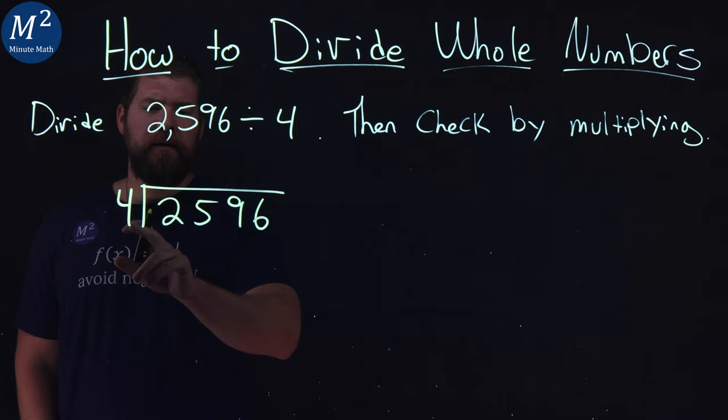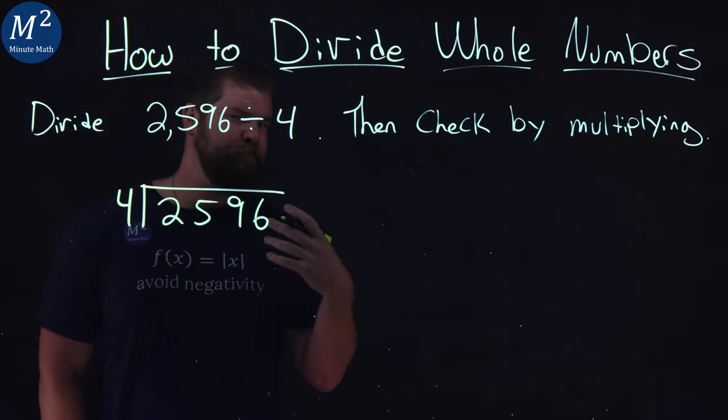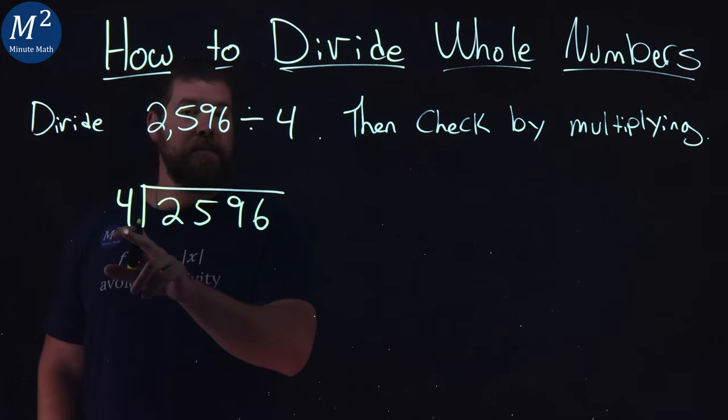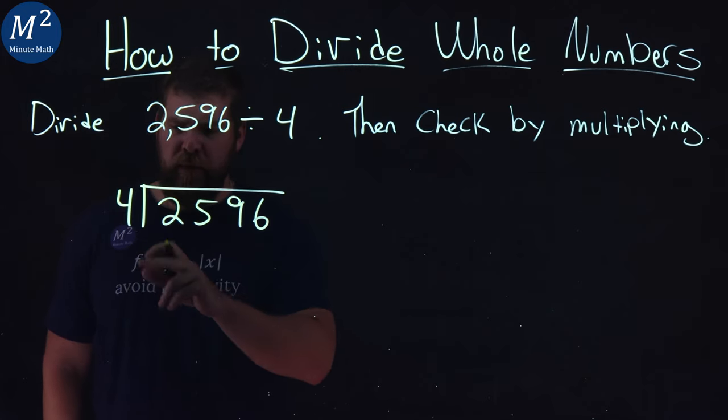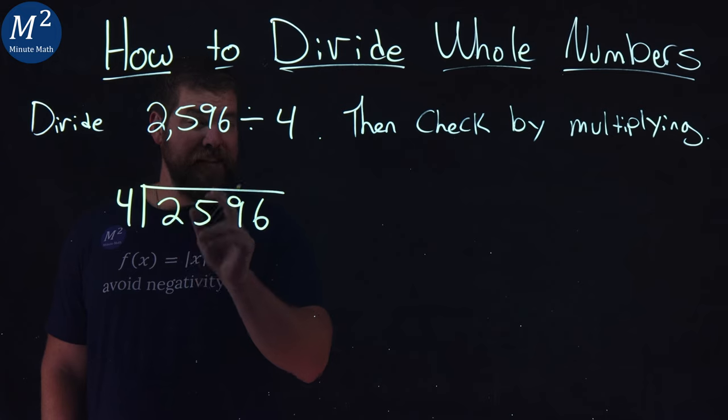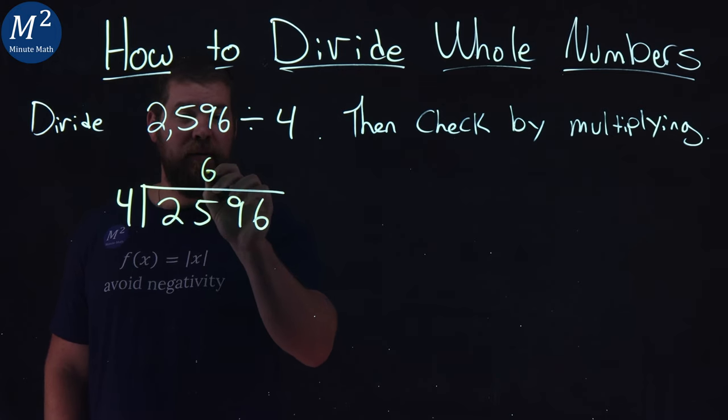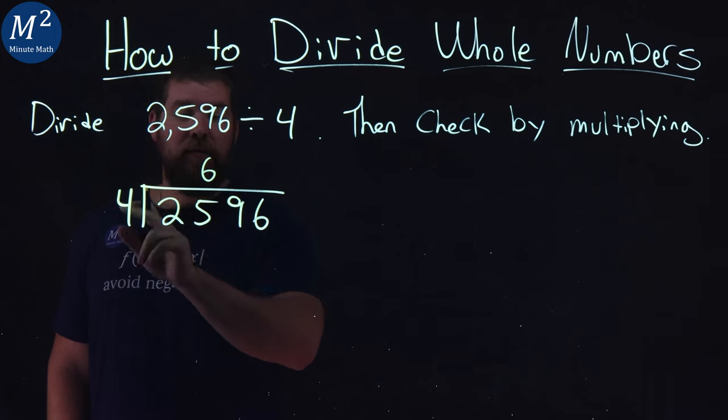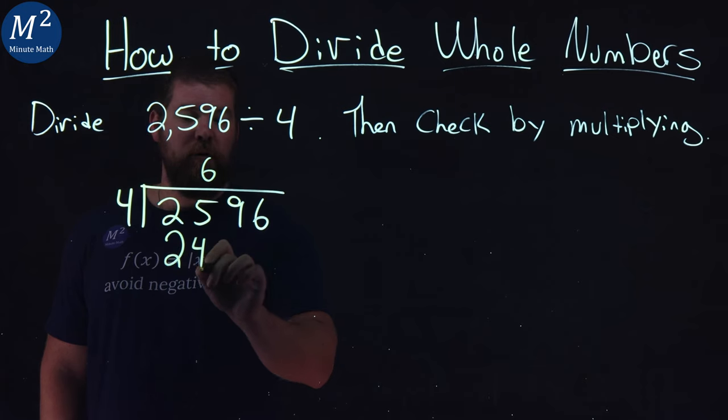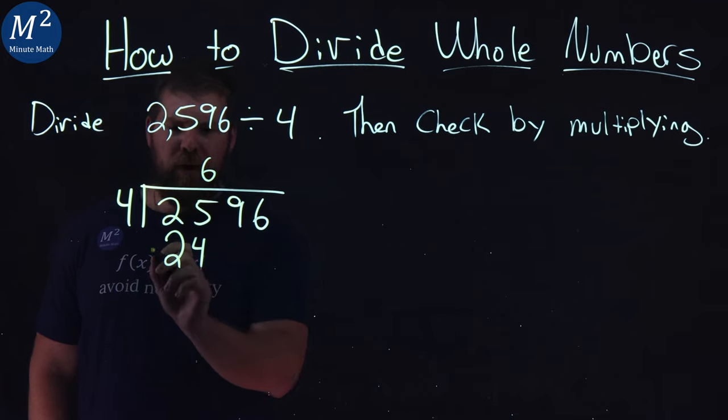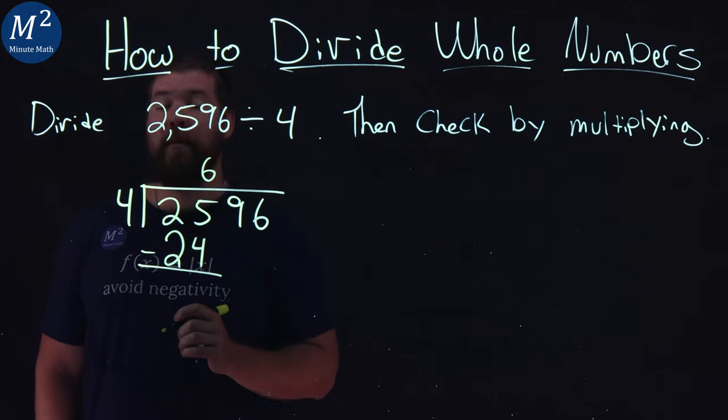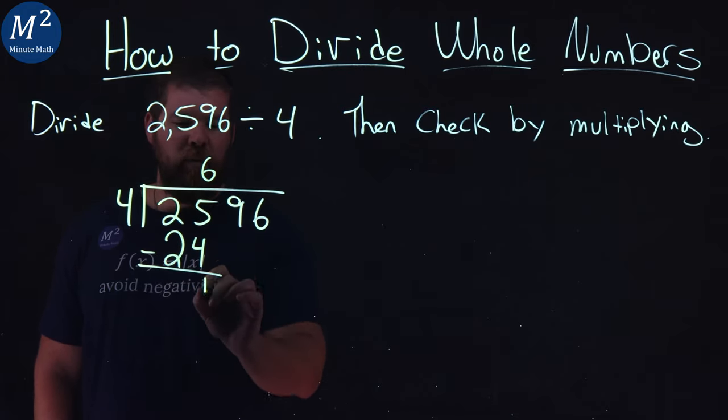Does 4 go into 2? No, so we go to the next number. 4 goes into 25. Combine the two. 4 goes into 25 six times, so I put a 6 above the 5, because 6 times 4 is 24. Remember, we're trying to find the number closest we can get to 25 without going over it. We subtract: 25 minus 24 gives me 1.